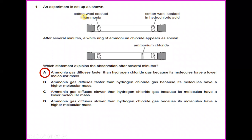Question number 1. An experiment is set up as shown, where you have in the test tube cotton wool soaked in ammonia and on the other right hand side you also have cotton wool soaked in hydrochloric acid. After several minutes, a white ring of ammonium chloride appears as shown. Which statement explains the observation after several minutes? The answer for this question is A. Ammonia gas diffuses faster than hydrogen chloride gas because its molecules have a lower molecular mass.